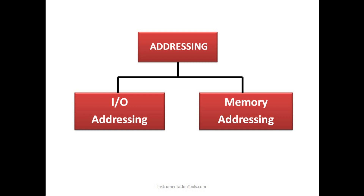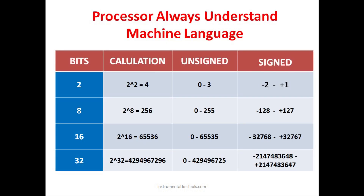IO addressing is the addressing of the input terminals and output terminals of the PLC. Memory addressing is inside the memory of the PLC — it is basically the addressing of the internal bits of the PLC's memory.